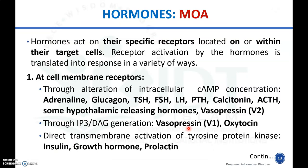Coming to the mechanisms of action of hormones in general — hormones act through their specific receptors located within target cells. There are three mechanisms. First, hormones may act at receptors present on the cell membrane — by increasing cyclic AMP concentration, as in the case of adrenaline, glucagon, TSH, FSH, and PTH; or by activating membrane receptors through IP3/DAG generation, as with vasopressin and oxytocin; or by direct transmembrane activation of tyrosine protein kinase, as with insulin, growth hormone, and prolactin.